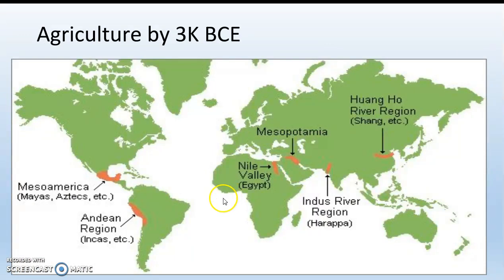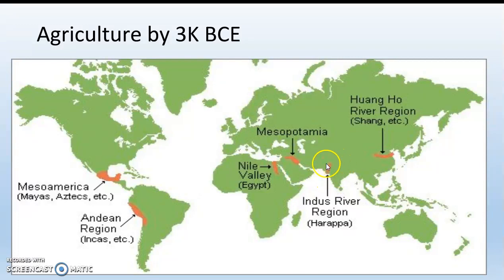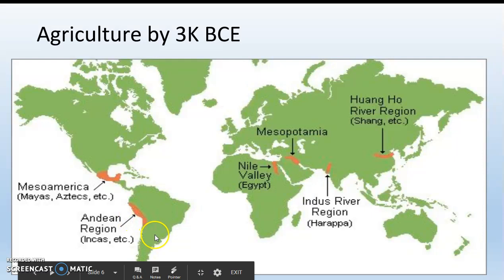On this map, we see all the places where agriculture popped up on its own. The very first place was Mesopotamia, which is the modern-day Middle East. Second was the Nile River in North Africa and modern-day Egypt. Third was the Indus River region in India. Fourth was along the Huang He River in China. And eventually we get farming in Mesoamerica in modern-day Mexico by the Mayas and the Aztecs — we'll talk about them in Unit 3 — and in South America with the Incas.